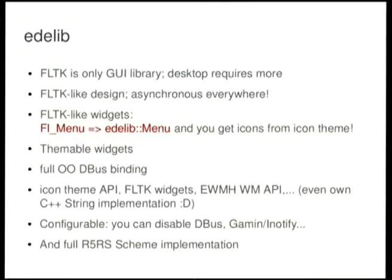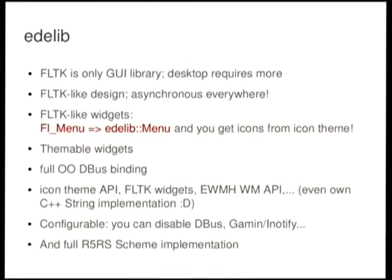Let me talk quickly about EDELib. EDELib is a drop-in replacement for the Fast Light Toolkit — it's just a continuation of that same library. For example, if you have a menu using the FLTK menu, you just replace it with the EDELib menu and you will instantly get icons from icon themes inside it. It is designed to easily replace current FLTK code. There is also a full C++ DBus binding, an API for icon themes, it is quite configurable, and the best of all, it gives you a full Scheme implementation inside it.